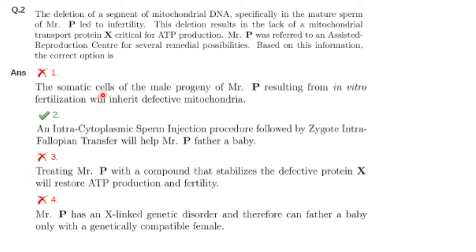Option 1 states that somatic cells of the male progeny of Mr. P resulting from in vitro fertilization will inherit defective mitochondria. However, mitochondria are maternally inherited, not paternally. So somatic cells of the male progeny of Mr. P from IVF will not inherit defective mitochondria. Option 3 says treating Mr. P with a compound that stabilizes the defective protein X will restore ATP production and infertility.